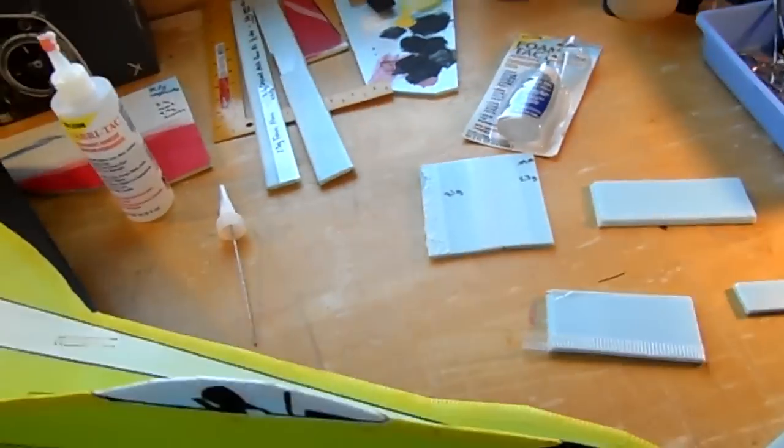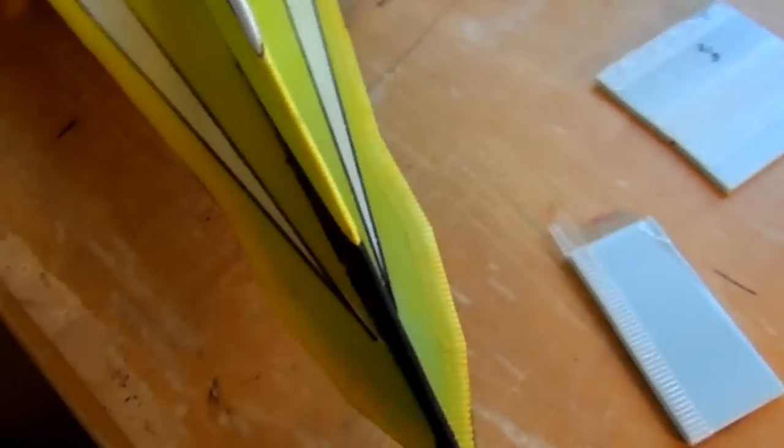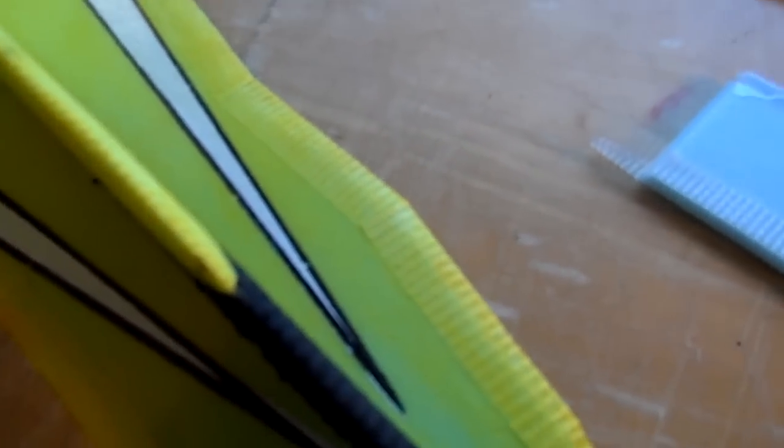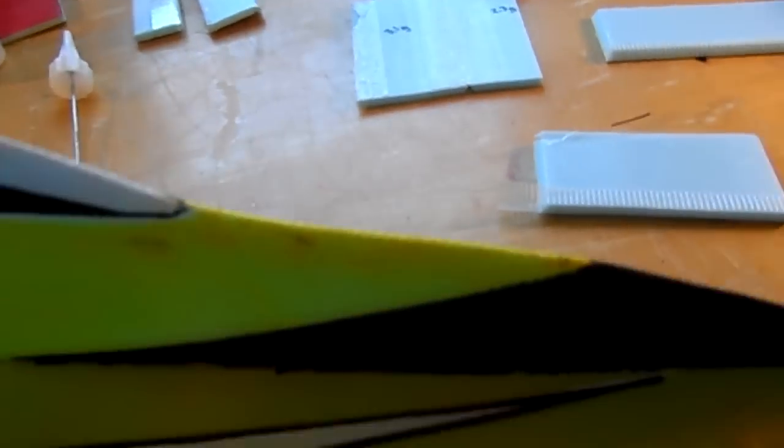And this is the airplane that I first tried it on, and if you look at the edges, it looks a lot like the Xtreme Packing Tape because it's got that fiber mesh, but it adds very, very little weight.